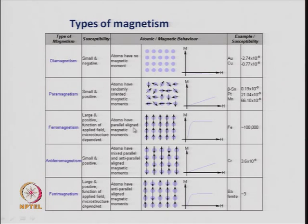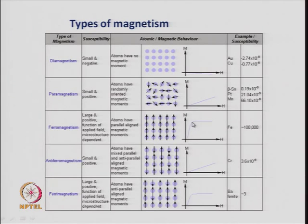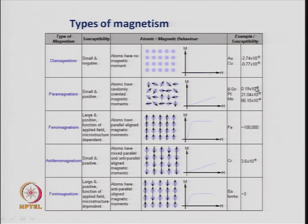In ferromagnetism, the value is large and positive, is a function of applied field, and is dependent on the microstructure. All the atoms have parallel aligned magnetic moments. When you apply a magnetic field it reaches some value and becomes constant — that is the maximum you can get when all the moments are aligned in one direction. The value of ferromagnetic susceptibility is nearly 10⁵, which is about 11 orders of magnitude higher than diamagnetism or simple paramagnetism.